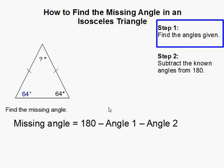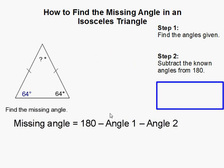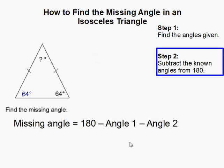Alright, so now you simply have to subtract the angles that you know from 180, because remember that the sum of all the internal angles in a triangle equals 180 degrees.